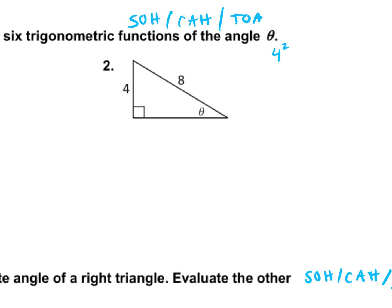Pythagorean Theorem. So 4 squared plus B squared equals 8 squared. The 8 is on the other side of the equal sign because it's the hypotenuse. So we have 16 plus B squared equals 64. Subtract 16 on both sides, so B squared is equal to 48.